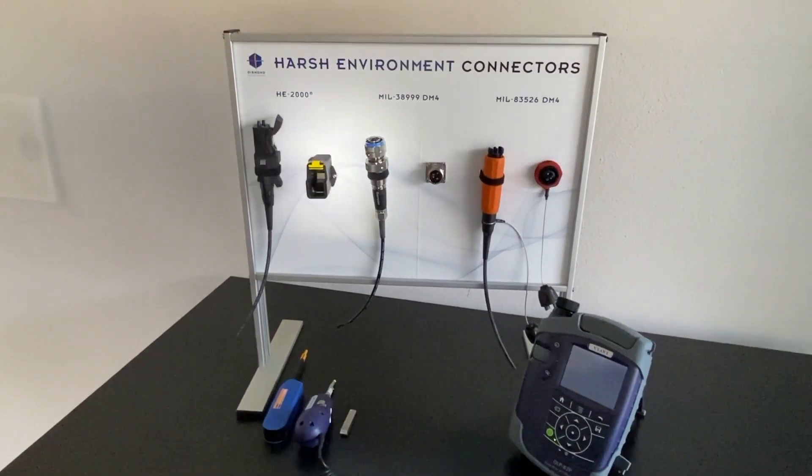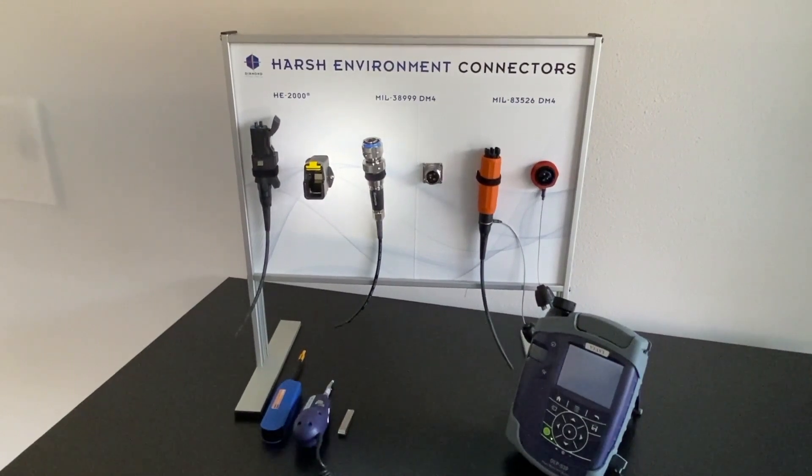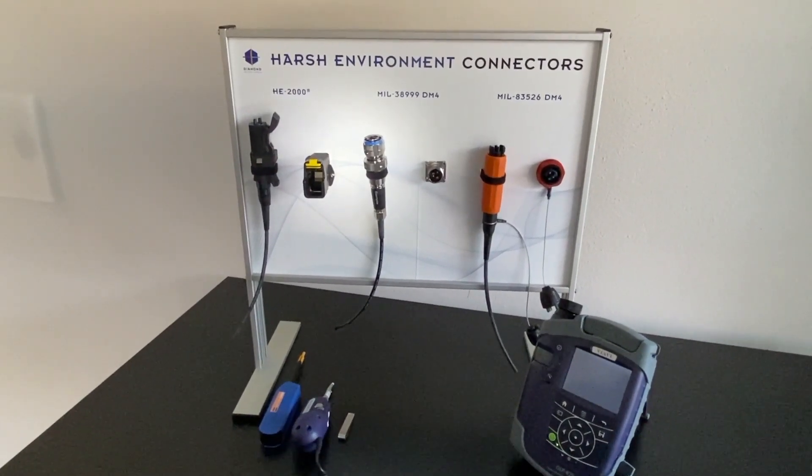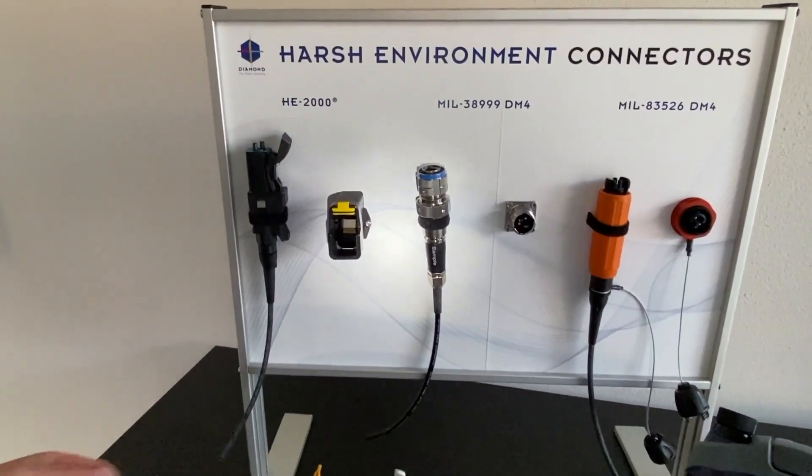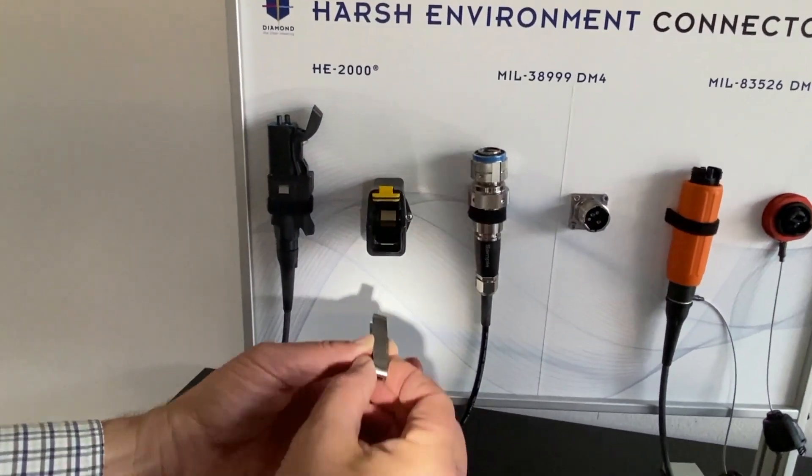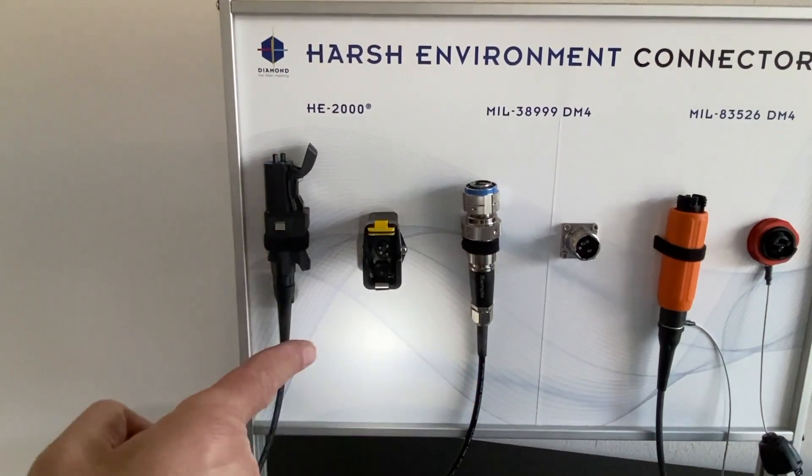I will now demonstrate how to inspect the end faces of the ferrules of the HE-2000 bulkhead. What we need is a clip to hold down my inner spring.